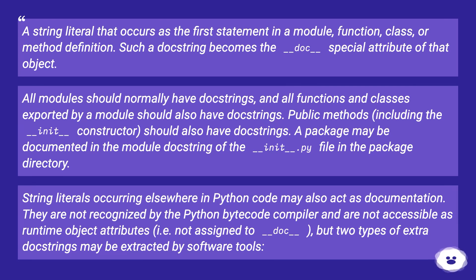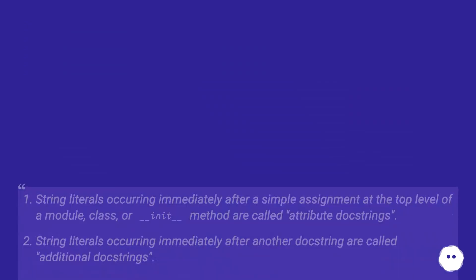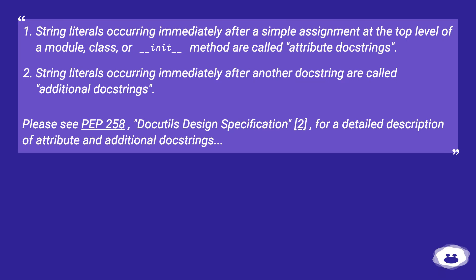A package may be documented in the module doc string of the __init__.py file in the package directory. String literals occurring elsewhere in Python code may also act as documentation. They are not recognized by the Python bytecode compiler and are not accessible as runtime object attributes, i.e., not assigned to __doc__, but two types of extra doc strings may be extracted by software tools. String literals occurring immediately after a simple assignment at the top level of a module, class, or __init__ method are called attribute doc strings. String literals occurring immediately after another doc string are called additional doc strings. Please see PEP 258, DocuTel's design specification, for a detailed description of attribute and additional doc strings.